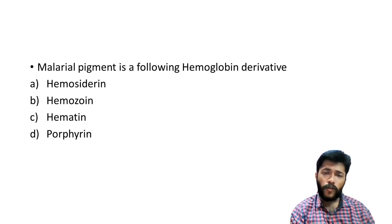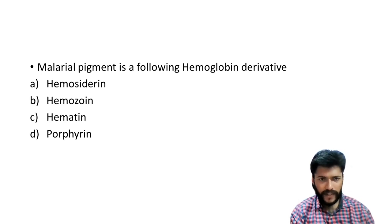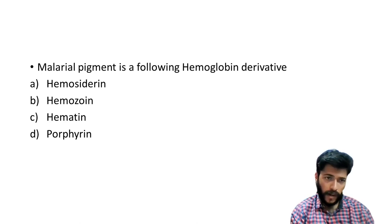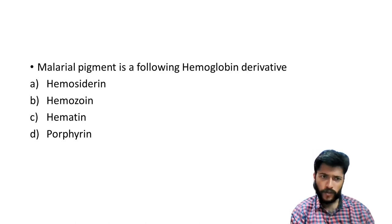Malarial pigment — which of the following is a hemoglobin derivative? That is hemozoin. Hemozoin results from degradation or destruction of RBCs by the malarial parasite, specifically the trophozoite form. Hematin is basically acid degradation of hemoglobin — when a person has GIT bleeding and vomits it out (hematemesis), the stomach acid degrades hemoglobin to form acid hematin. In first-year practical exams, hemoglobin content was estimated by converting hemoglobin to acid hematin using N/10 HCl. Hemozoin is a toxic form due to destruction of RBCs by the malarial parasite.